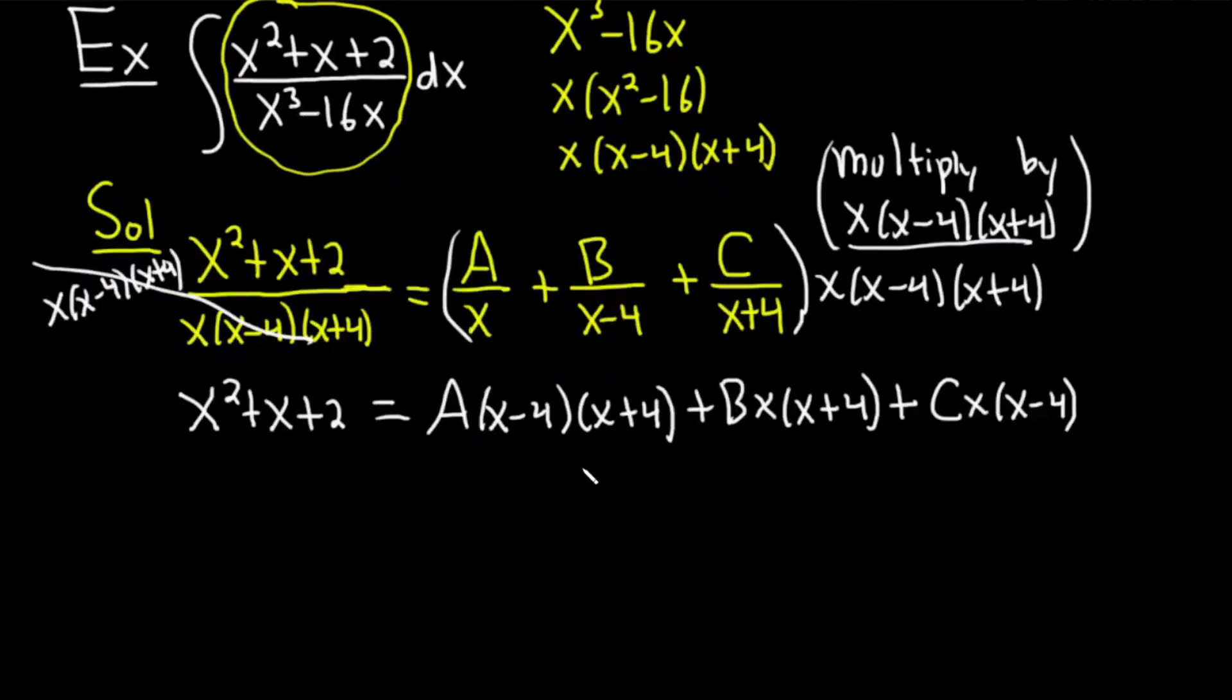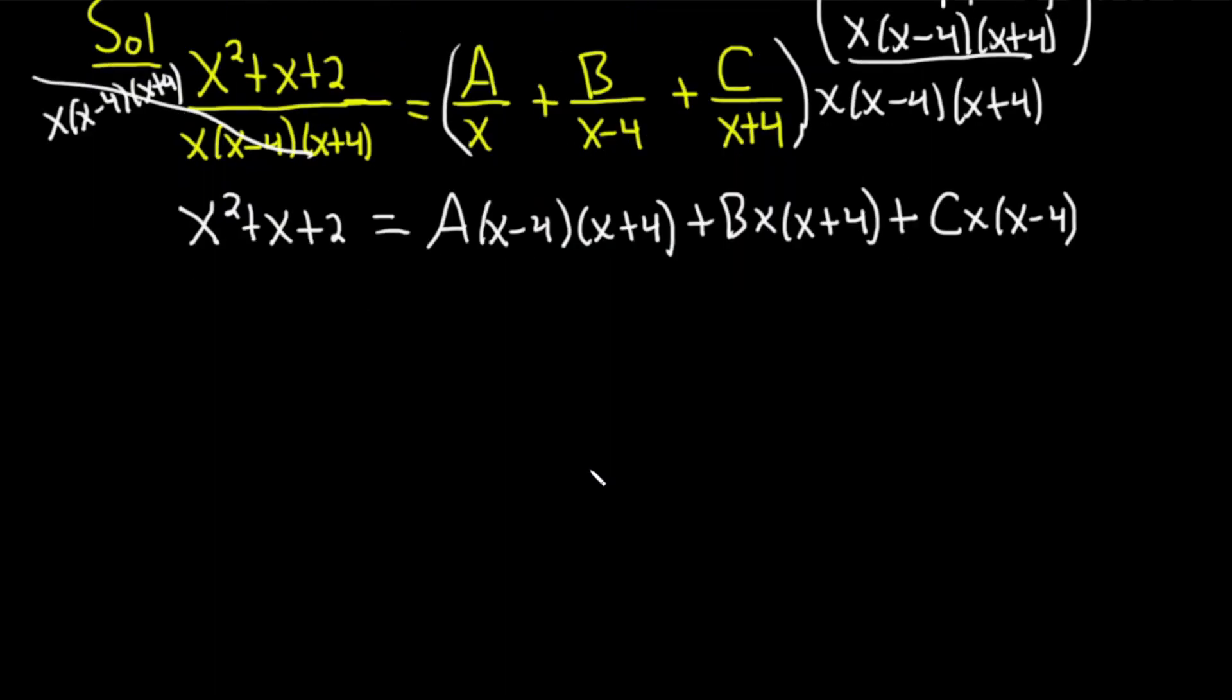Now what we're going to do is we're going to plug in values for x to find A, B, and C. So what values are we going to plug in? Values that make things go away. For example, if I plug in 4, the A is going to go away. So let's do that.